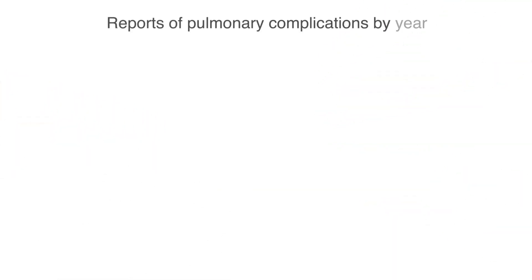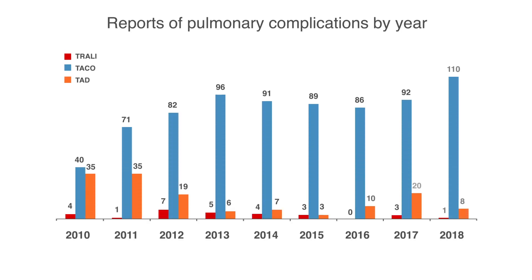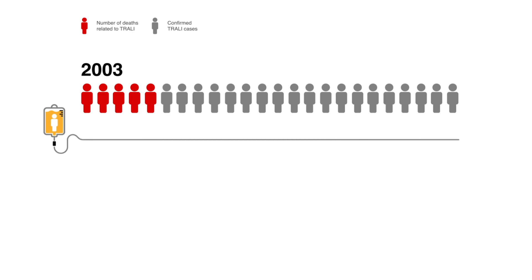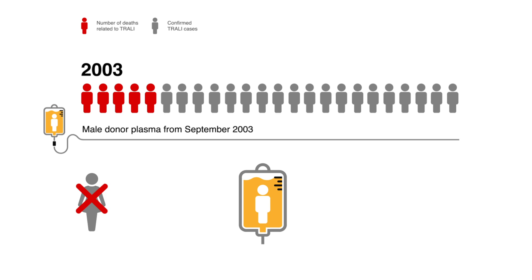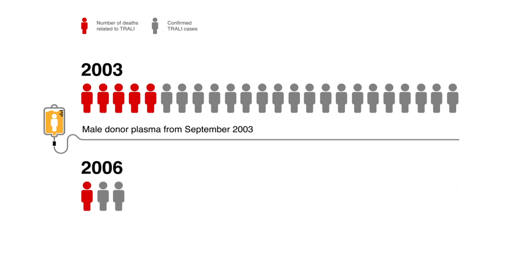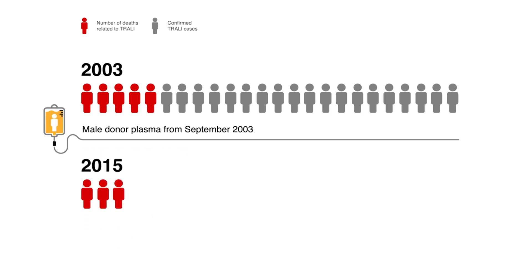TACO is much more common than TRALI. Increased reporting of TACO is likely due to better recognition of this complication. Following the observation that TRALI was associated with plasma-rich components, predominantly from female donors, in 2003 the blood services restricted fresh-frozen plasma production to male donors. In addition, pooled platelets are re-suspended in male plasma, or more recently platelet additive solution, and female apheresis platelet donors are screened for white cell antibodies. Following this change of practice, SHOT has documented a significant reduction in both reported cases and deaths from TRALI.